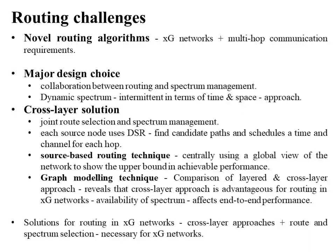A cross-layer solution that considers joint route selection and spectrum management is proposed. In this approach, each source node uses DSR (Dynamic Source Routing) to find candidate paths and schedules a time and channel for each hop. This source-based routing technique is performed centrally using a global view of the network. A comparison of layered and cross-layer approaches can be made using a novel graph modeling technique, which reveals that the cross-layer approach is advantageous for routing in XG networks because spectrum availability directly affects end-to-end performance.